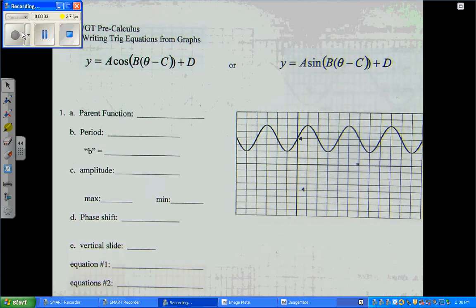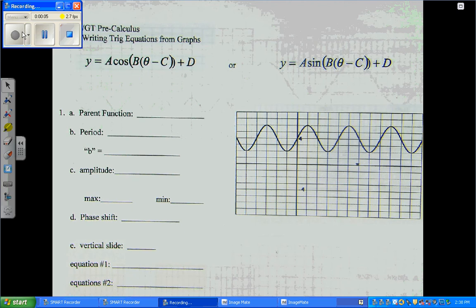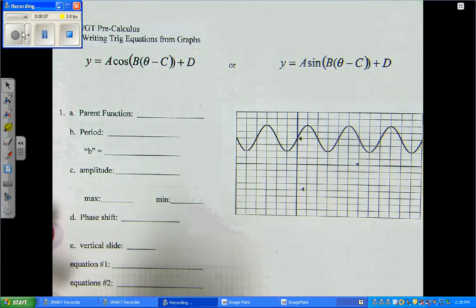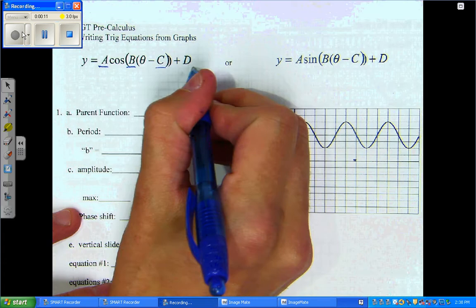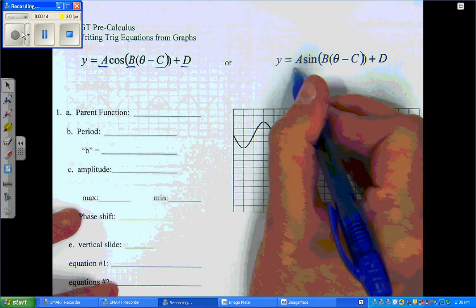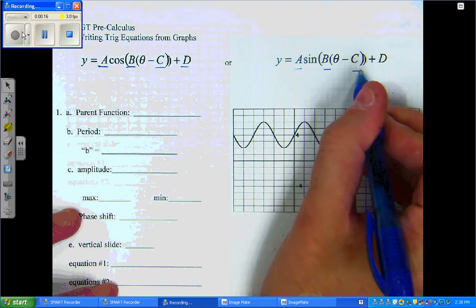Hello. Today we are going to be writing the equations of trig functions, sine and cosine. The one thing we want to keep in mind is that we have to find A, B, C, and D for both of them.